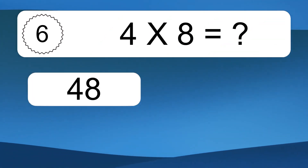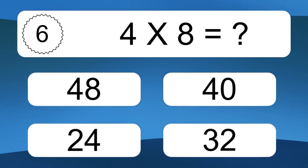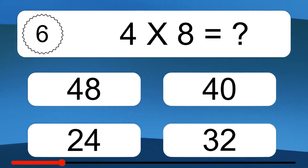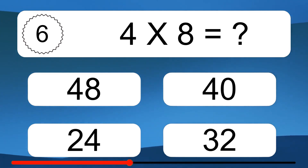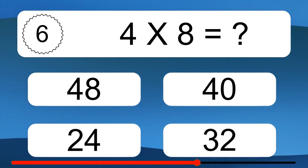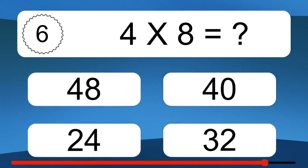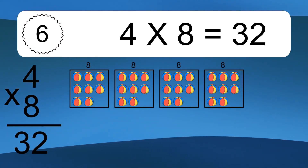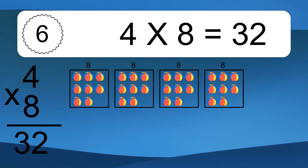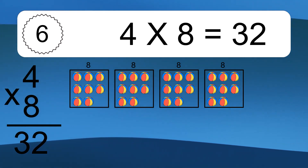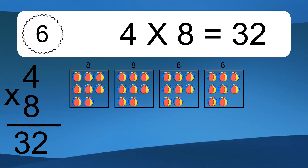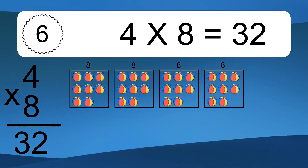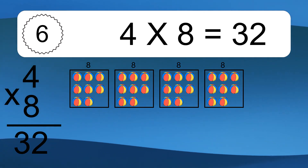4 times 8 equals what? We have 4 boxes, and each box has 8 colorful balls inside. If you count all the balls in all the boxes together, you will have 4 times 8 balls. This equals 32 balls.